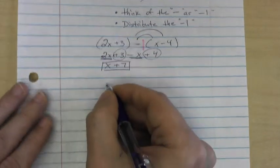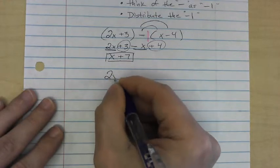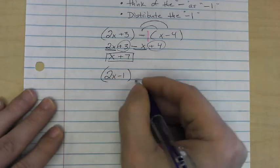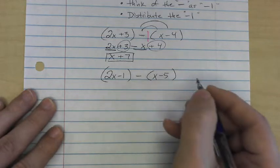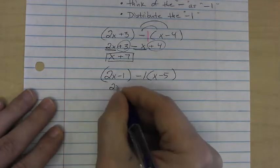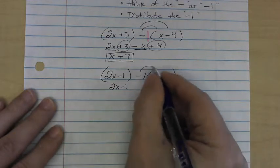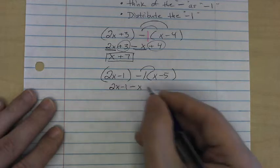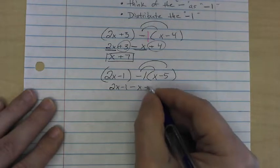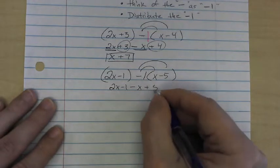Here's another one for us to try. 2x minus 1 minus x minus 5. So again, I put a 1 right here. I have 2x minus 1. Here, the signs are different, so I put minus, 1 times x is x. Here, the signs are the same, so I put a plus, and 1 times 5 is 5.